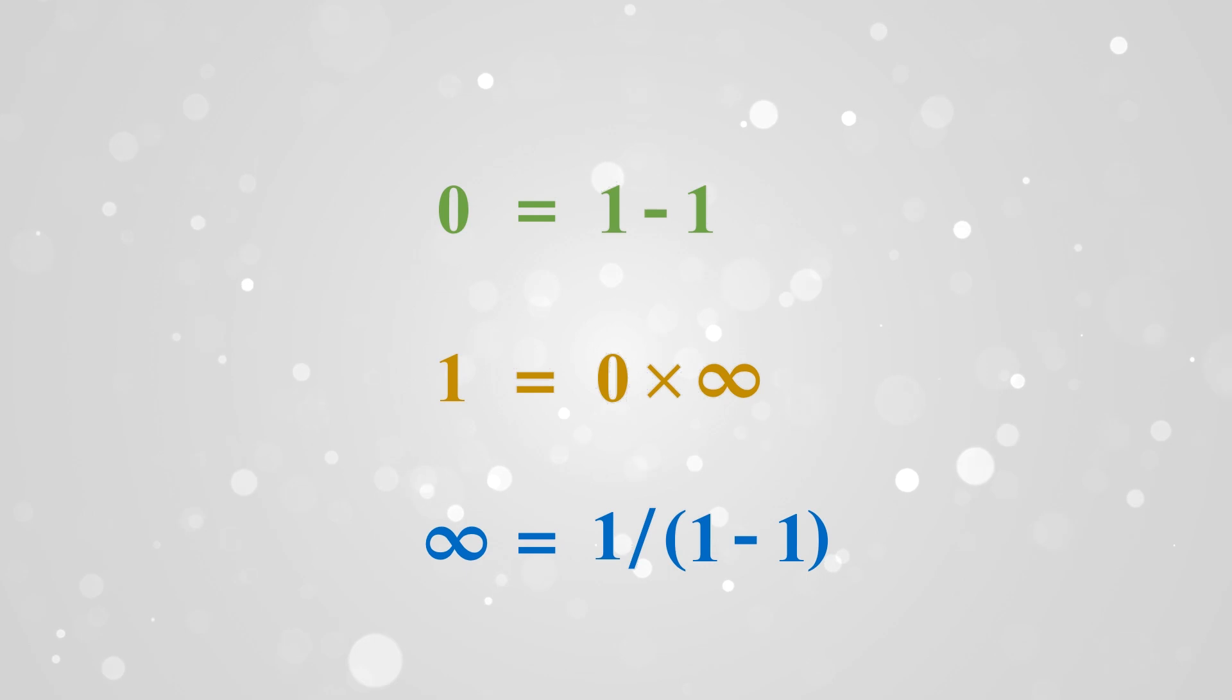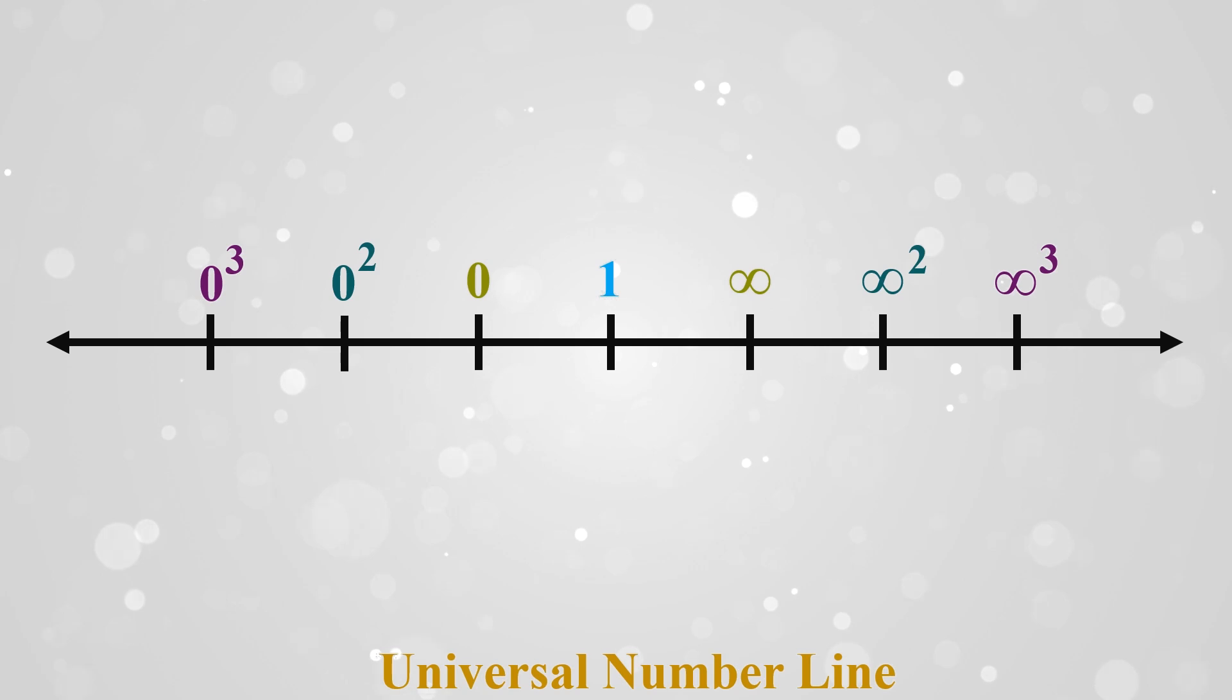So once we know 0, 1, infinity there comes multi-dimensional universal number line that expands infinity over infinity to entire universe just like our universe does.